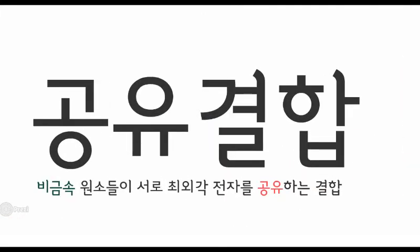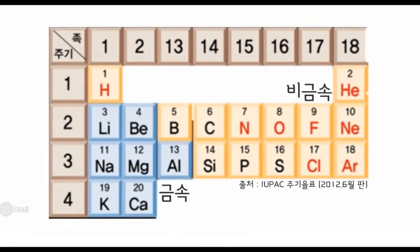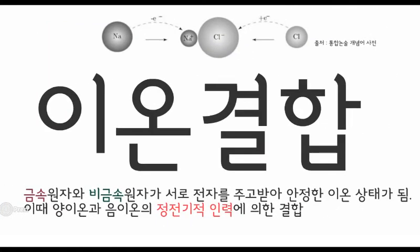비금속 원소들이 서로 최외각 전자를 공유하는 결합이죠. 비금속 원소란 주기율표에서 오른쪽 위쪽에 있는 원소들을 말합니다. 만약 비금속과 금속 원소가 서로 결합을 하게 된다면 이온결합을 하게 됩니다. 서로 전자를 주고받아서 안정한 양이온 그리고 음이온이 된 후에 서로 정전기적 인력에 의해 결합을 하는 거죠.